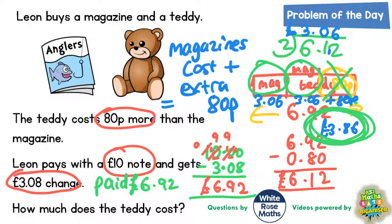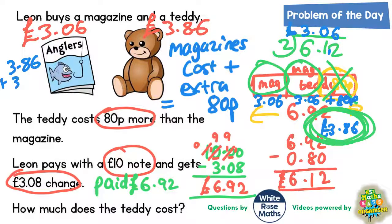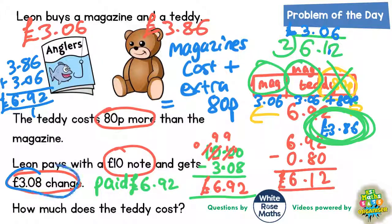Just to recap the main points: the magazine is £3.06 and the teddy is 80p more than that, so the teddy is £3.86. We should find those two together add up to £6.92, so let's double check. £3.86 add £3.06: 6 plus 6 is 12p; 8 plus 0 plus the 1 carried is 9; 3 plus 3 is 6. So the two together do indeed add up to £6.92. If you paid £6.92 with a £10 note, you'd get £3.08 change. Final answer — the teddy costs £3.86.